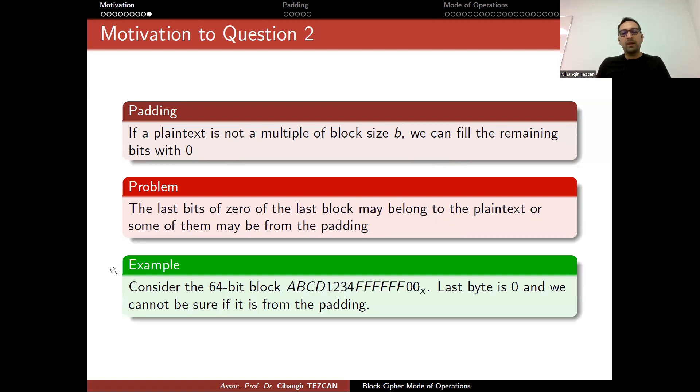But the problem is that the last bits of zero of the last block may belong to the plaintext or some of them may be from the padding. So this introduces an ambiguity. Consider a 64-bit block in hexadecimal format where the last byte is zero. The person who decrypts the block and obtains this plaintext now has to decide if the last byte is from the padding or it is from the original plaintext. So this introduces an ambiguity. For the last bits, if they are zero, you will never be sure if it comes from the padding or not.